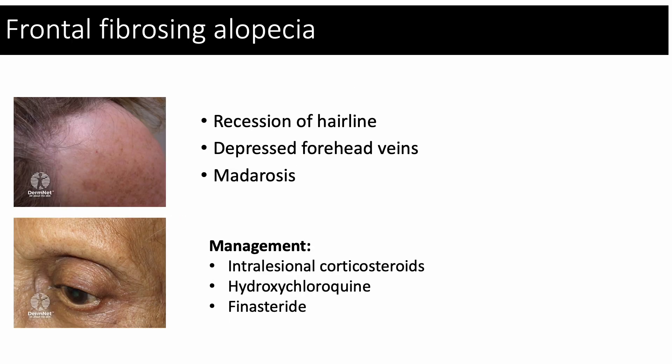Frontal fibrosing alopecia is another scarring alopecia which affects the frontal scalp hair margin, leading to recession of the hairline. Other clinical features include depressed forehead veins and madarosis. Treatment options include intralesional corticosteroids, hydroxychloroquine, or finasteride.